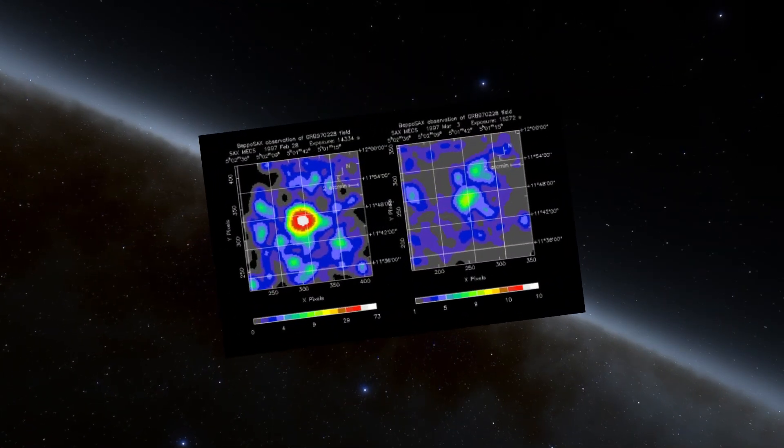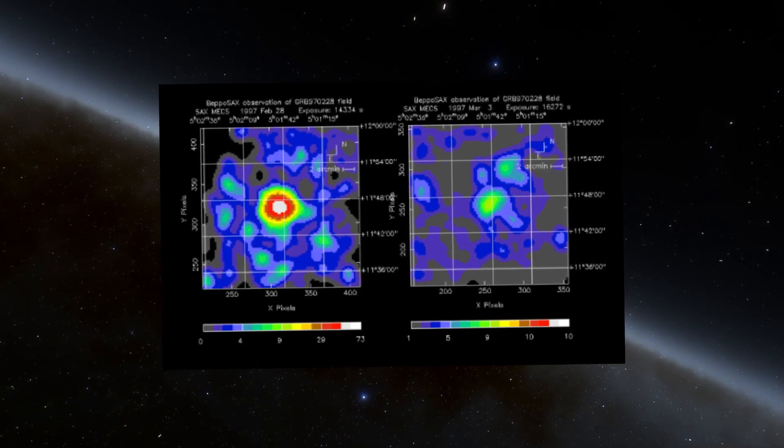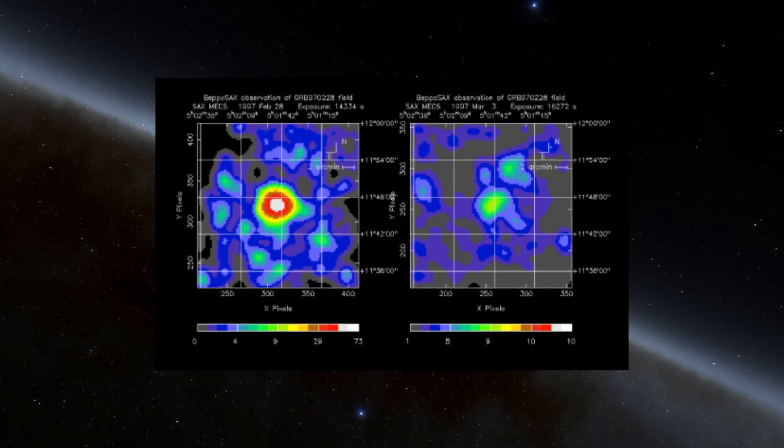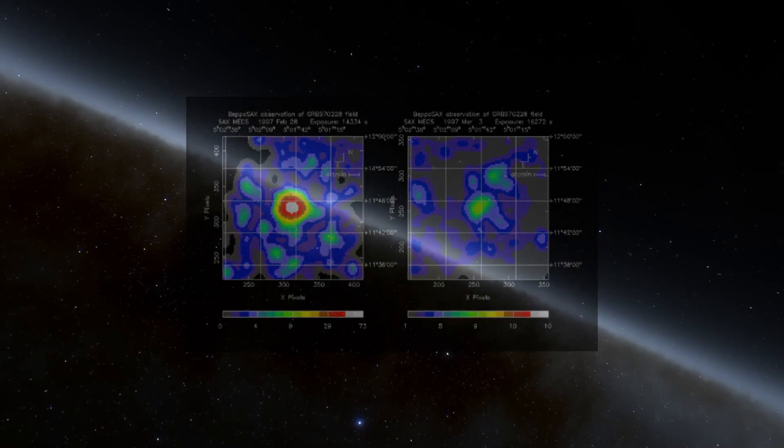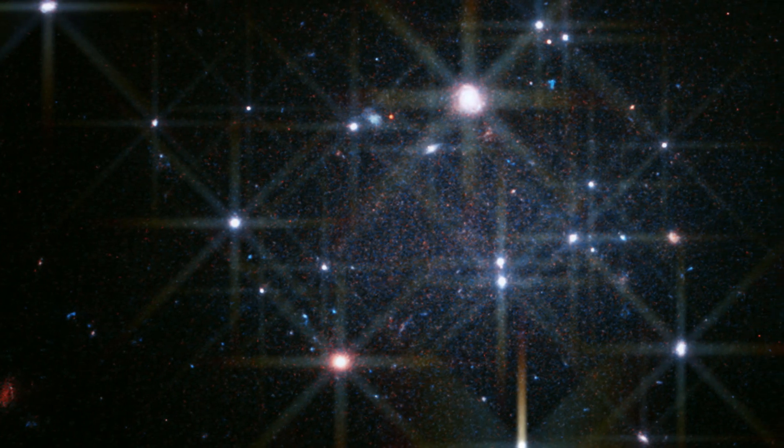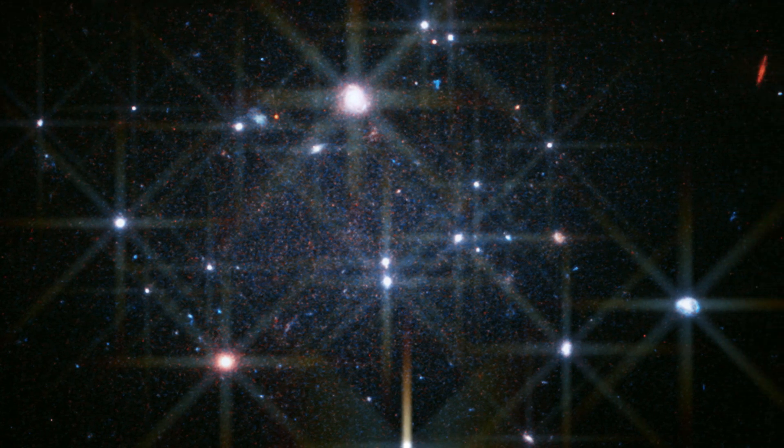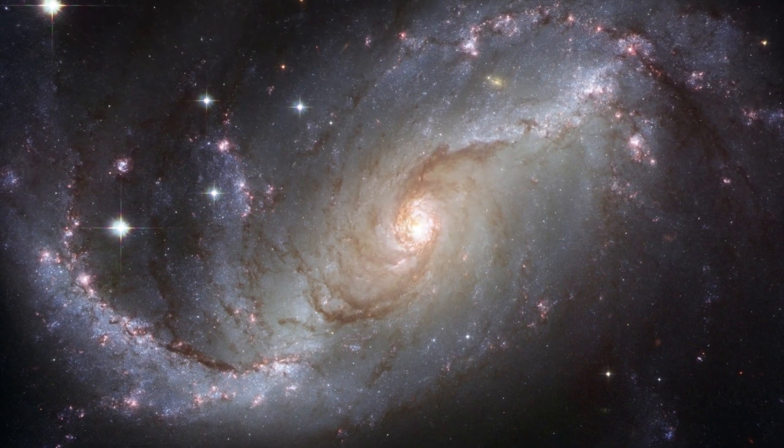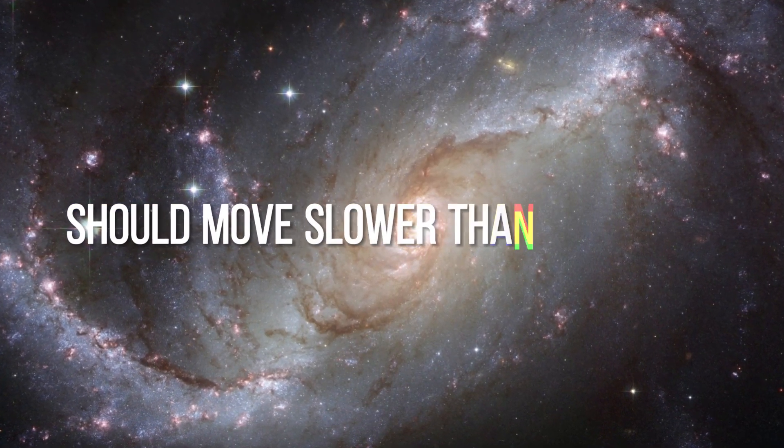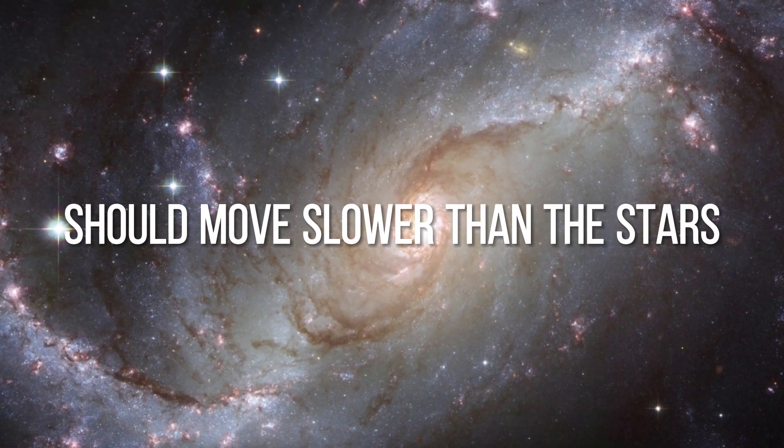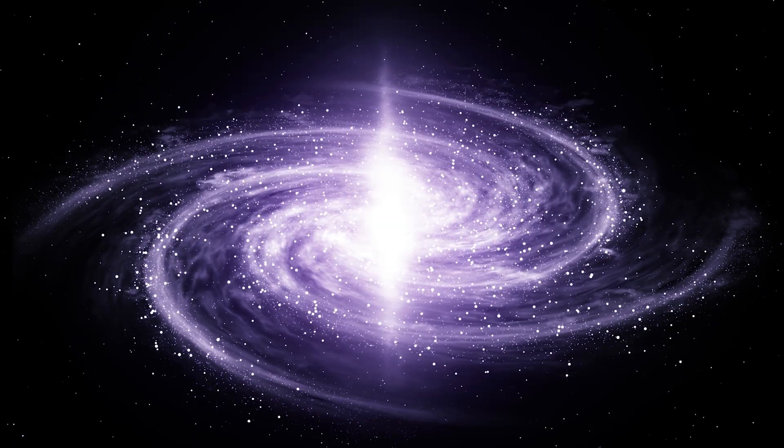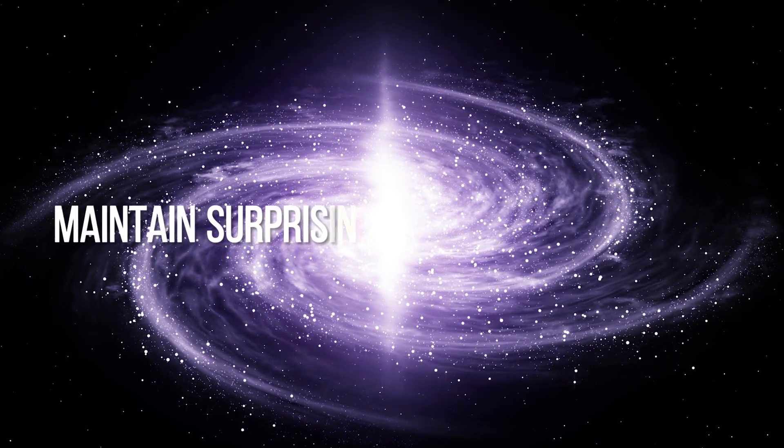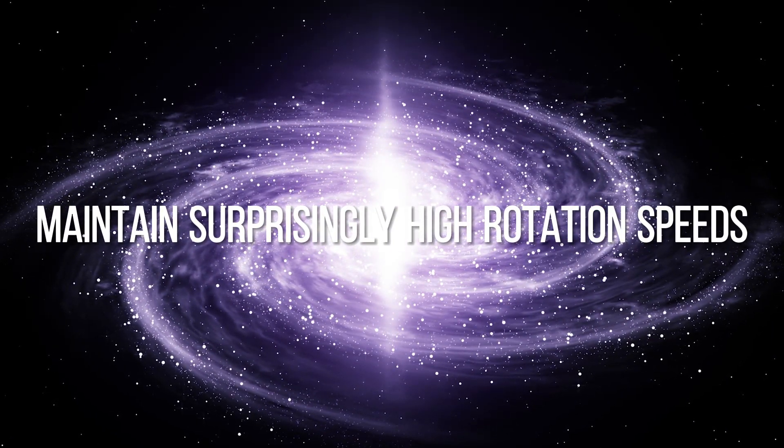One of the main reasons to believe in the existence of dark matter is the discrepancy between the amount of visible mass in the universe and the rotation speed of galaxies. According to the laws of physics, if the amount of visible mass were the only responsible factor for gravity, the stars farther away from a galaxy's center should move slower than the stars closer to the center. However, detailed observations of galaxies have revealed that stars in their outer regions maintain surprisingly high rotation speeds, defying expectations.